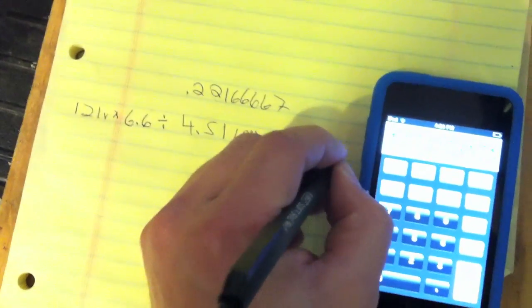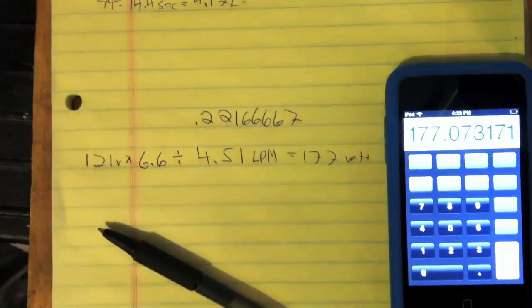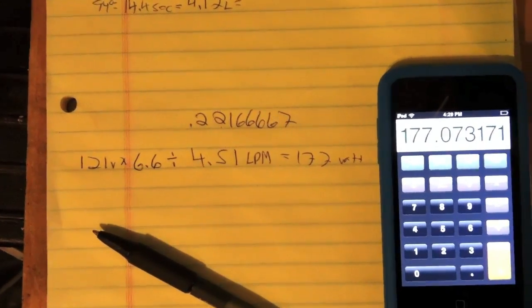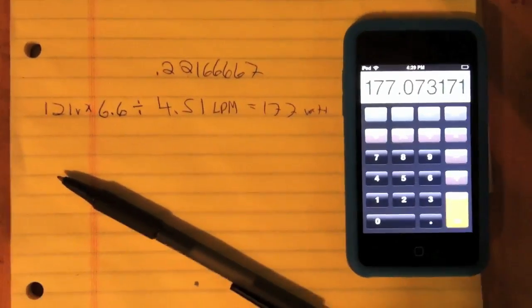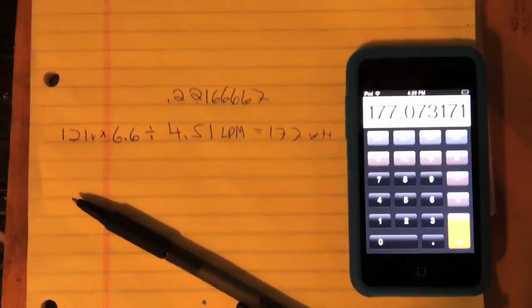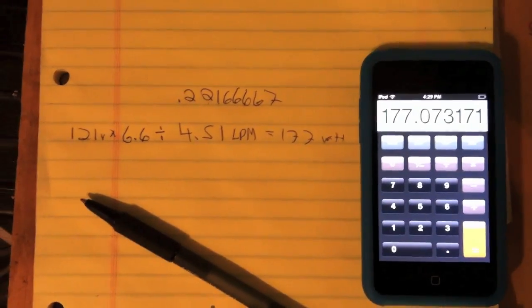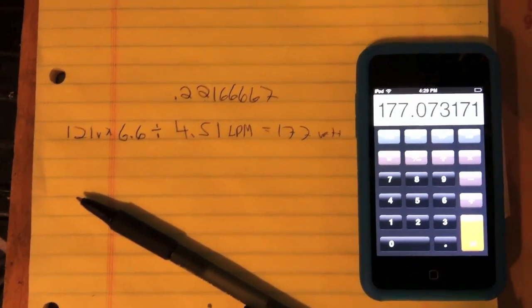177 watts per liter. Now that number varies slightly with each test depending on how much it's producing. The cell seems to get more efficient, the higher, the more hydrogen we produce. But 177 watts per liter is pretty good number right there.